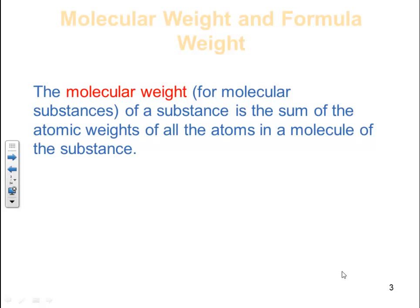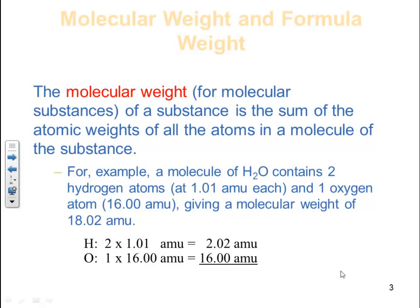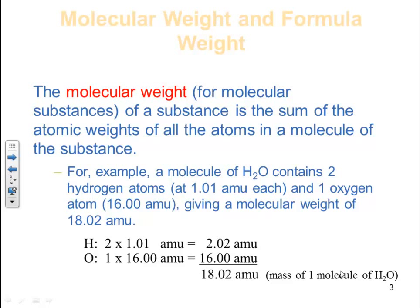The molecular weight of a substance, for molecular substances, is the sum of the atomic weights of all the atoms in a molecule of the substance. For example, a molecule of water contains two hydrogen atoms at 1.01 amu each and one oxygen atom at 16.00 amu, giving a molecular weight of 18.02 amu. You take 2 × 1.01 for hydrogen plus 1 × 16.00 for oxygen — both from the periodic table — giving a total of 18.02 amu. That's the mass of one molecule of water.